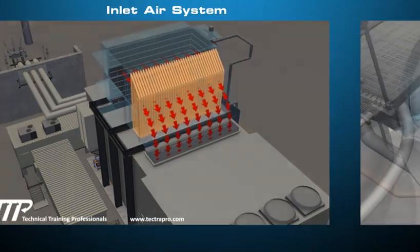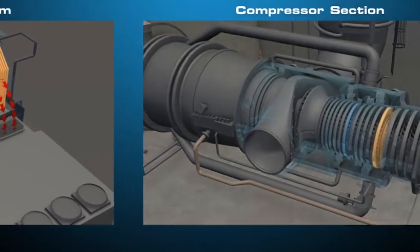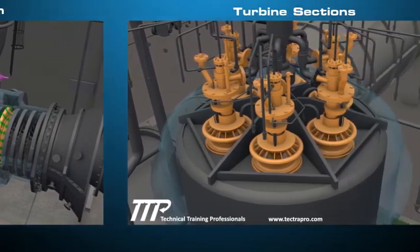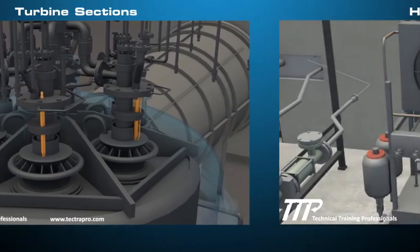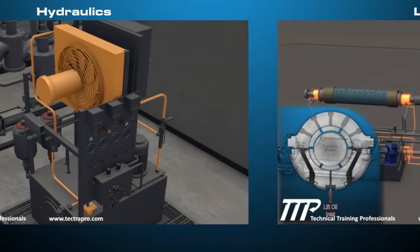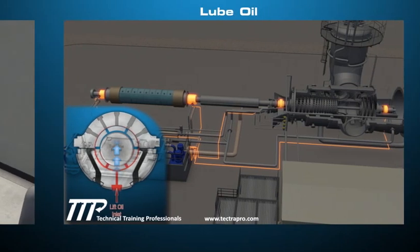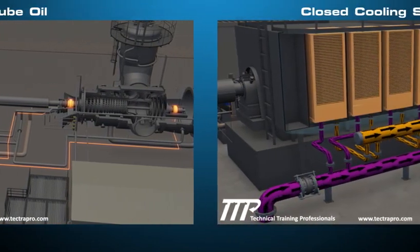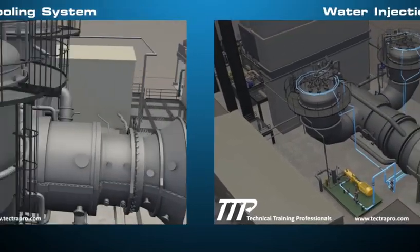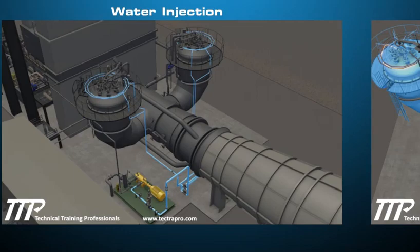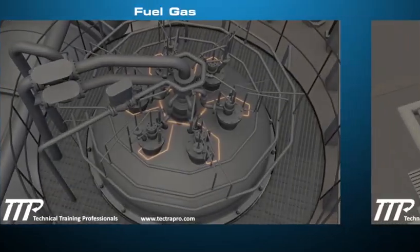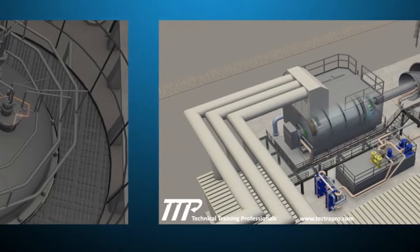The main systems include the inlet air system, compressor section, turbine sections, hydraulics, lube oil, and fuel gas control. These systems work together to produce torque that will drive an electric generator.